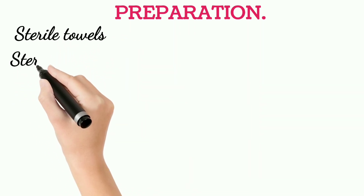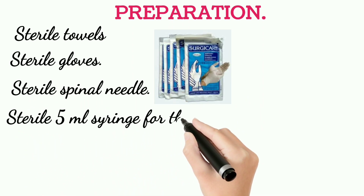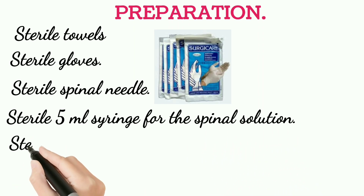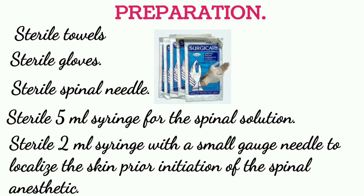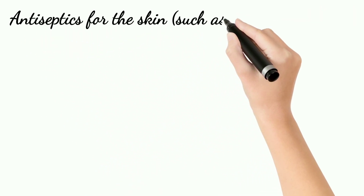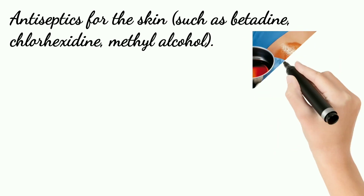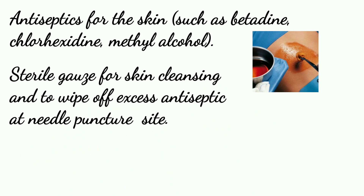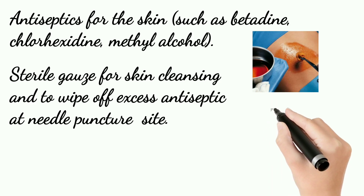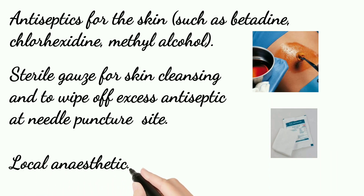Preparation — equipment needed: sterile towel, sterile gloves, anesthetic tray, sterile needles, sterile 5ml syringe for spinal solution, sterile 2ml syringe with small gauge needle to infiltrate local anesthetic into the skin prior to inserting the spinal needle, antiseptic solution such as betadine, chlorhexidine, or methyl alcohol for skin preparation, and sterile gauze for skin cleansing and to wipe off excess antiseptic at the needle puncture site.